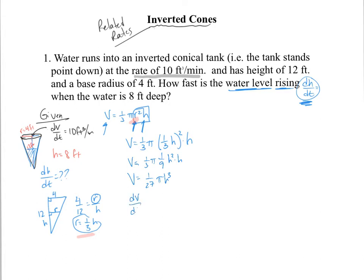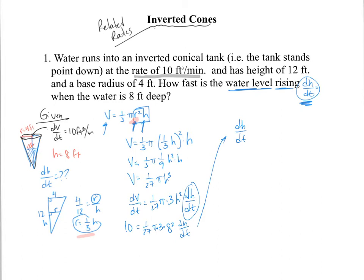Now we differentiate implicitly: dV/dt = (1/27)π · 3h² · dh/dt. We know dV/dt = 10 and we want the answer when h = 8, so: 10 = (1/27)π · 3 · (8²) · dh/dt. Solving for dh/dt gives 45/(32π), which is approximately 0.4476 feet per minute.